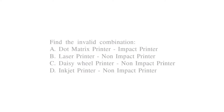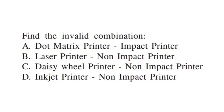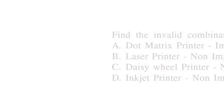Find the invalid combination: dot matrix printer is an impact printer — correct. Laser printer is a non-impact printer — correct. Daisy wheel printer listed as non-impact — this is an invalid combination, so daisy wheel non-impact is the wrong pairing.